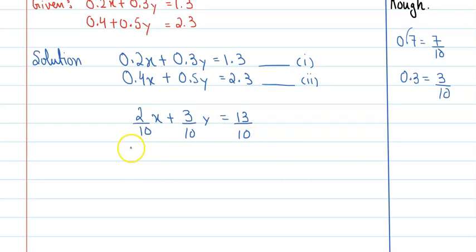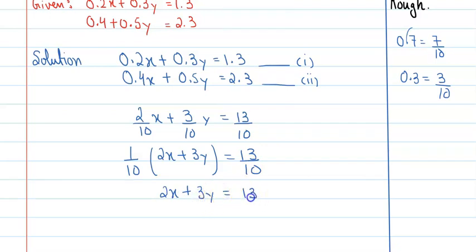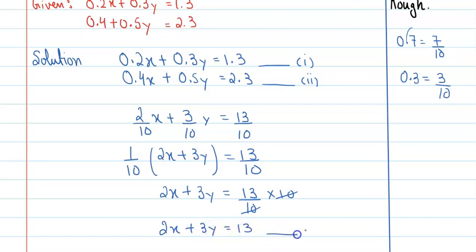अब अगर आप यहाँ से left hand side में 1 upon 10 को common ले लें, तो अंदर क्या बचेगा? It is 2x plus 3y, and this is 13 upon 10. अब यह जो 10 है, अगर आप इसे right hand side पे ले जाएं तो obviously multiplication की form में आएगा। So 2x plus 3y equal to 13 upon 10 into 10. जो आपकी equation number 1 है, वो कुछ इस तरह दिखेगी: 2x plus 3y equal to 13. This is your equation number 1, which is now in standard form AX plus BY equal to C.